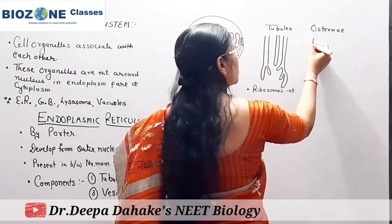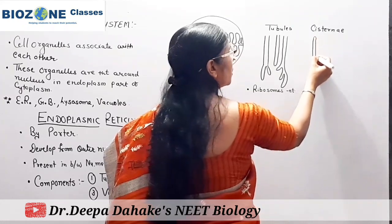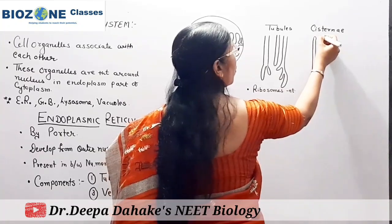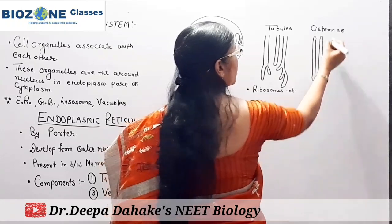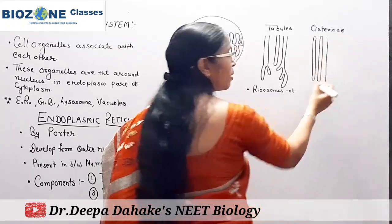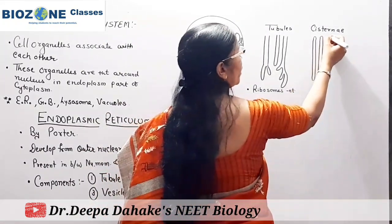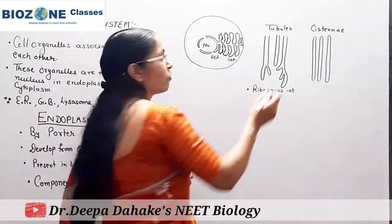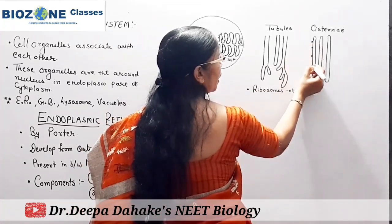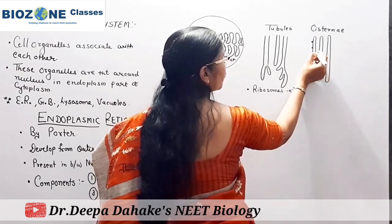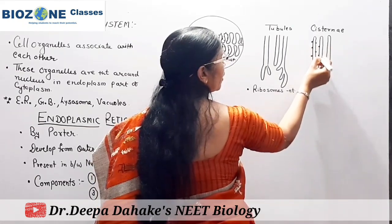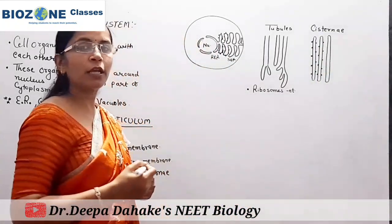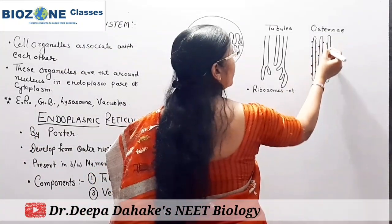Cisternae have a diameter that is nearly uniform throughout their length. Cisternae are closed at both ends and are parallelly arranged. When we study the presence of ribosomes: ribosomes are present on the external surface of cisternae. In rough endoplasmic reticulum, cisternae are predominantly present as a component. So in RER, the main component where ribosomes attach is the cisternae.